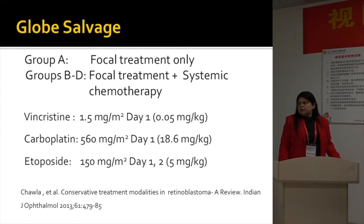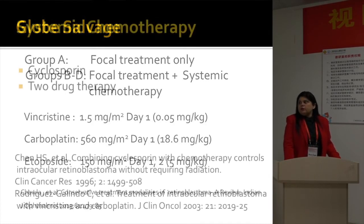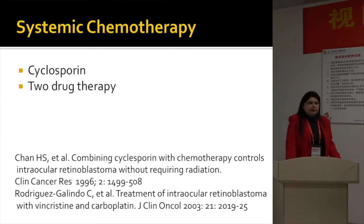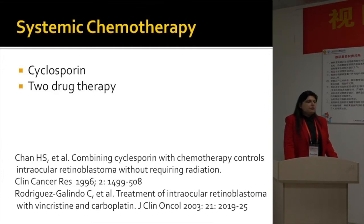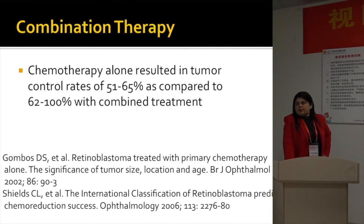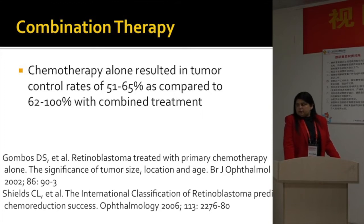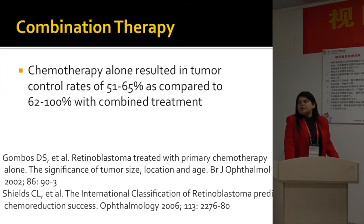We use VEC as the standard treatment for systemic chemotherapy combined with focal therapy. Some centers also use cyclosporine to overcome resistance, and there are papers showing that combining cyclosporine with chemotherapy controls intraocular retinoblastoma well. Because of concerns of leukemia with etoposide, some centers advocate two-drug chemotherapy with vincristine and carboplatin instead of three-drug chemotherapy for less advanced tumors. Combination therapy is what we use, as studies show chemotherapy alone resulted in lower tumor control rates compared to combined treatment.